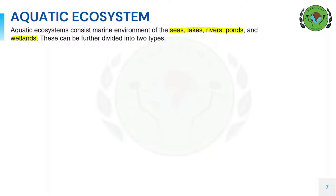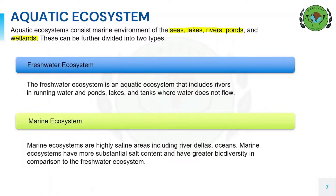Aquatic ecosystems can be further classified into freshwater ecosystem and marine ecosystem. The freshwater ecosystem includes rivers with running water and ponds, lakes and tanks where water does not flow. Marine ecosystems are highly saline areas including river deltas and oceans. Marine ecosystems have more substantial salt content and greater biodiversity in comparison to the freshwater ecosystem. Marine ecosystems are highly saline, whereas brackish areas have less saline water than river deltas.